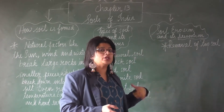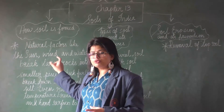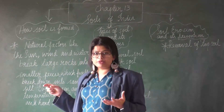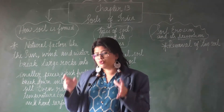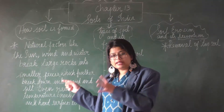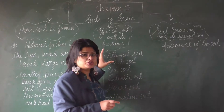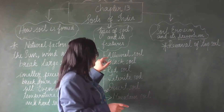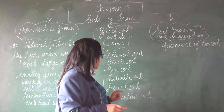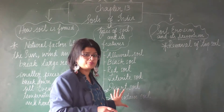First, about how soil is formed. Soil is formed due to natural factors like sun, wind, water, and temperature. They break large rocks into smaller pieces, which further break down into sand and silt — that is how soil is formed. The types of soil we are going to discuss are alluvial soil, black soil, red soil, laterite soil, desert soil, and mountain soil.